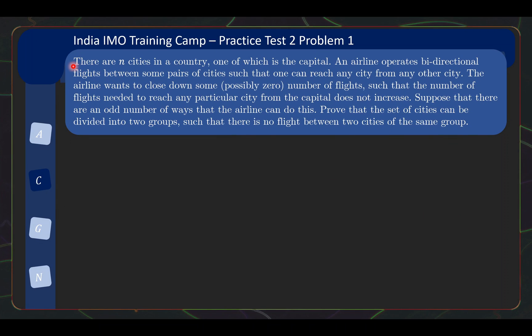Okay, so this problem is quite a mouthful, so I will read a couple of statements and then pause to digest those statements. There are N cities in a country, one of which is the capital. An airline operates bidirectional flights between some pairs of cities, such that one can reach any city from any other city. Pause here for a while, this basically sounds like a graph setup. Basically, we have a simple graph G.